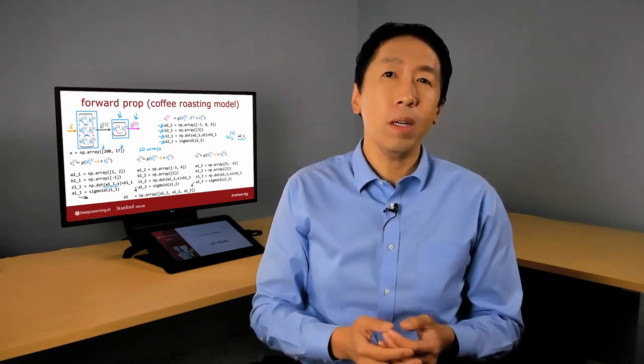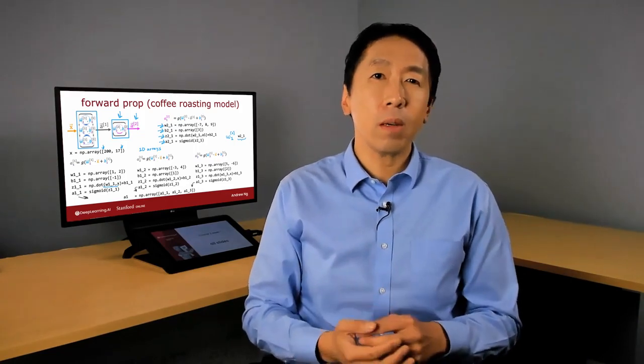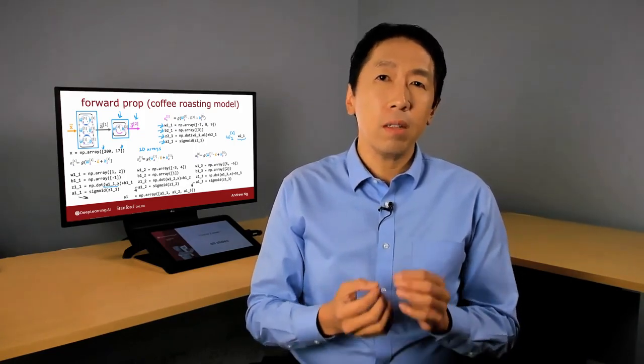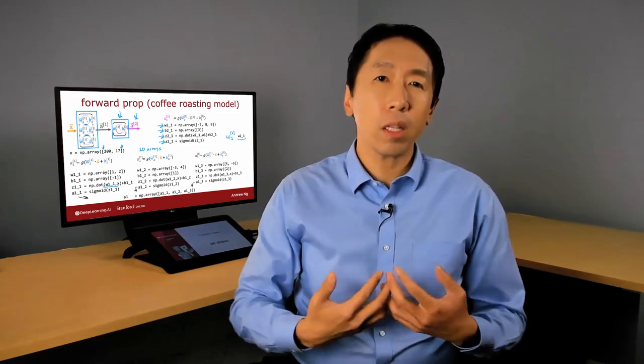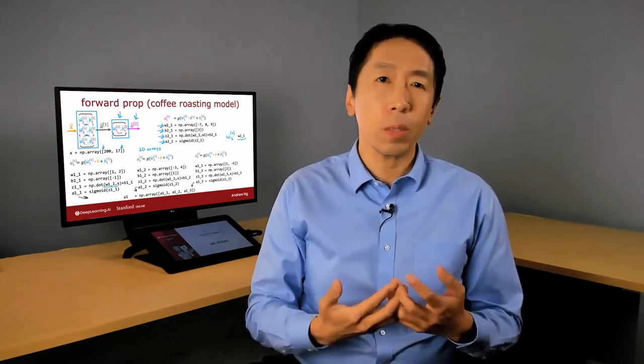Now there are a lot of expressions in this page of code that you just saw. Let's, in the next video, look at how you can simplify this to implement forward prop for a more general neural network, rather than hard coding it for every single neuron like we just did. So let's go see that in the next video.